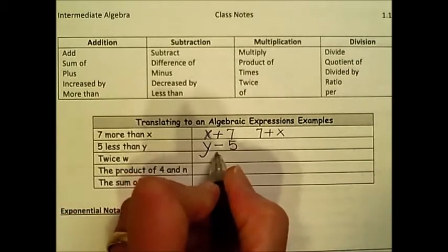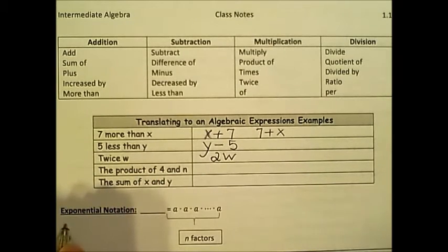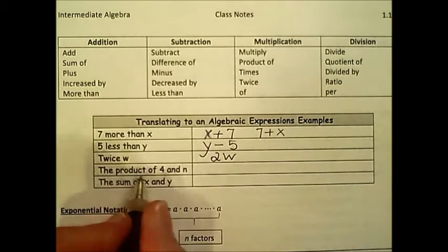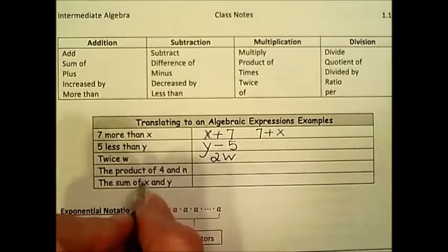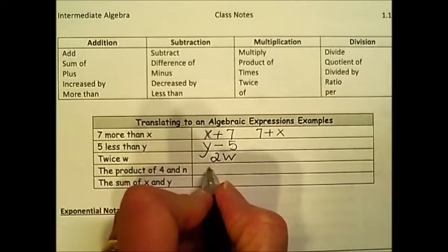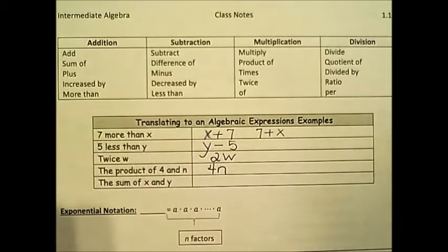Twice w, if you look under the multiplication, twice is there, implying two times. The next example, the product of 4 and n, product is a result of a multiplication. So I'm going to take 4 and times it by n. The variable right next to the number is implying multiplication.